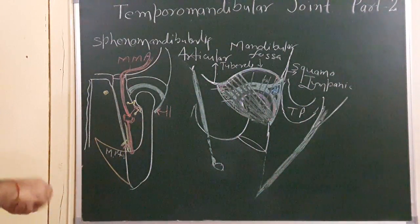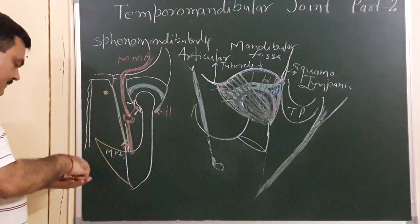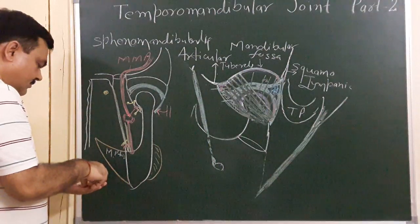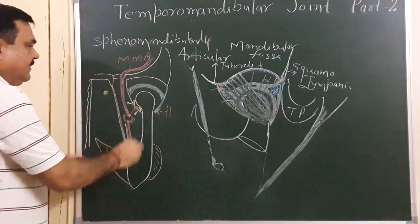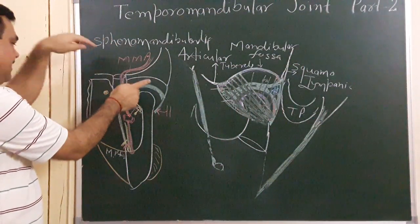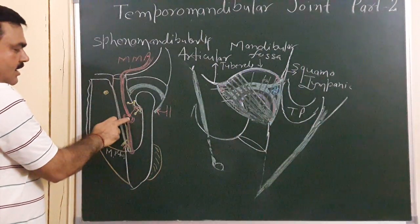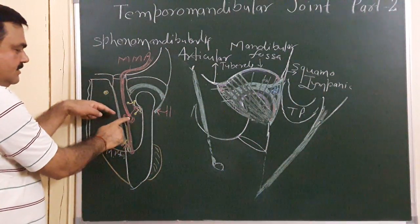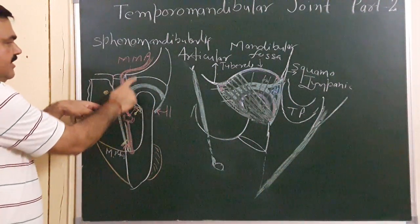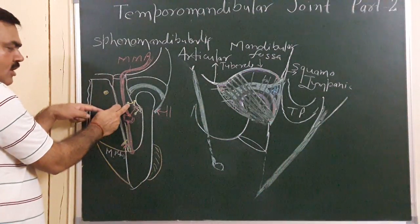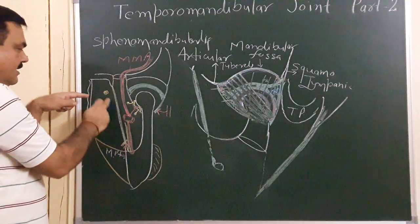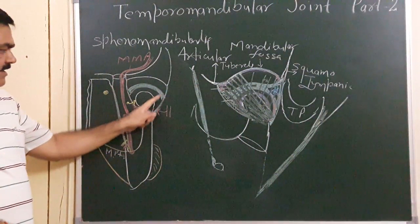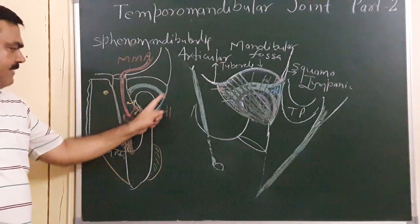These structures are related with this joint. Here is the position of the masseter and the medial pterygoid. Superiorly, the middle meningeal artery is present. Inferiorly, the maxillary artery is present. Medially, the sphenomandibular ligament, the chorda tympani, and the pharynx are present inferiorly. The masseteric nerve is also present.